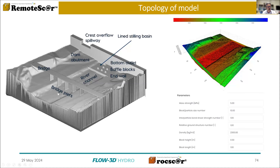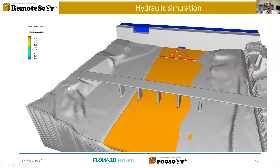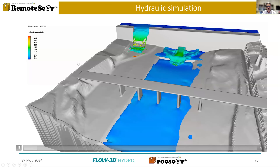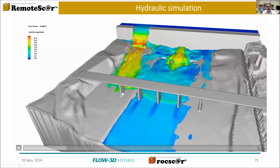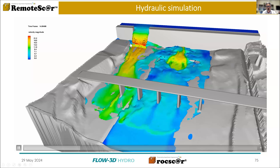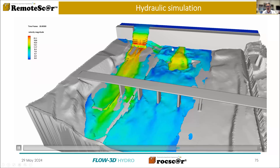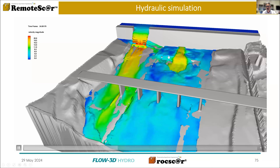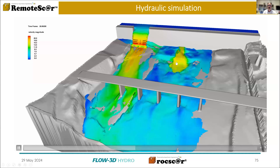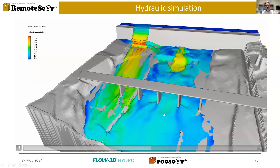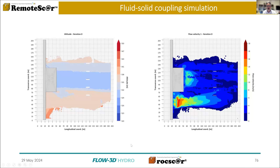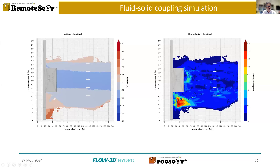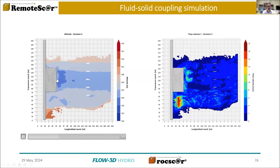We have a bottom outlet with a lined stilling basin with baffle blocks and an end wall coming into an unlined river channel on rock, and then we have some bridge piers here. If you put that into the hydraulics, you will see the jet impacting, providing a flow that is also impacting on the bridge pier where we will expect some scour. You have abutment flow coming back to the centralized section. The baffles are not sufficient and you still get significant velocity downstream of your stilling basin. You can see in plan view how progressively there is scour downstream of that stilling basin.